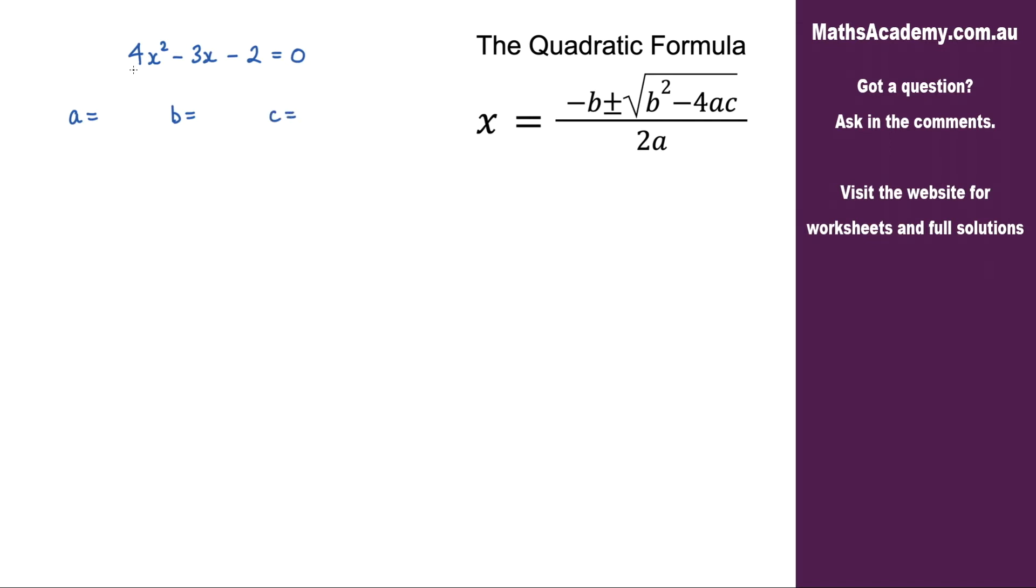The value of a is the coefficient of the x squared term, so that is 4. The coefficient of the x term, that is the b value, so negative 3. And the constant here is the c term, that is negative 2.